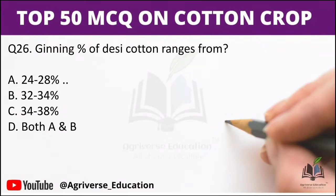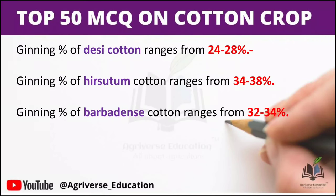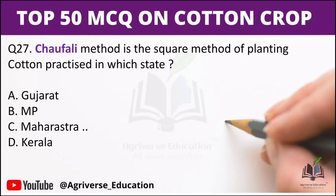Question 26: Ginning percentage of desi cotton ranges from — options are 24–28, 32–34, 34–38, or both A and B. The right answer is option A. Ginning percentage of desi cotton ranges from 24 to 28 percent. In case of hirsutum species, ginning percentage ranges from 34 to 38 percent, and in case of barbadense, ginning percentage ranges from 32 to 34 percent.